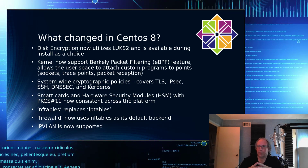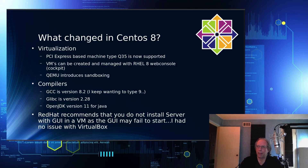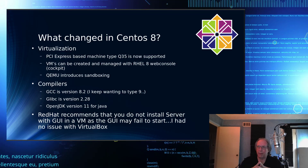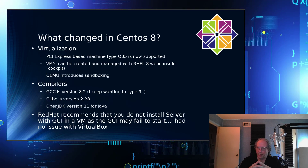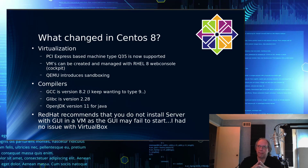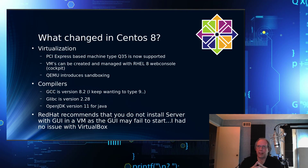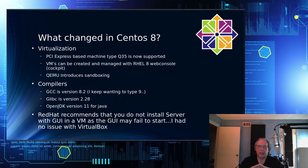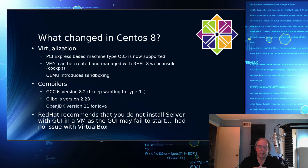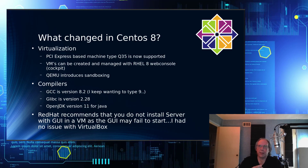IPvLAN is now supported in CentOS 8. On virtualization, the PCI Express-based machine type Q35 is now a supported feature. VMs can be created and managed with the cockpit — that was introduced in RHEL 8 and is also available in CentOS 8, though it's not enabled by default. QEMU introduces sandboxing, which adds more security to the VMs.